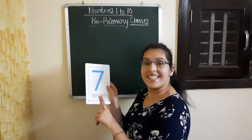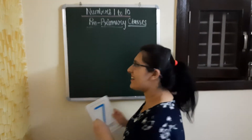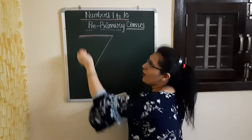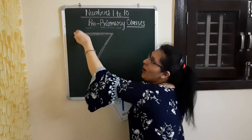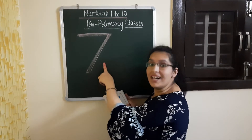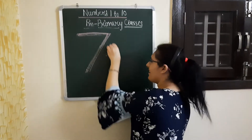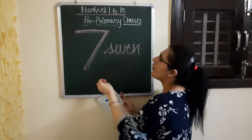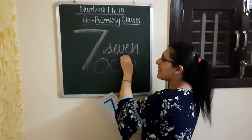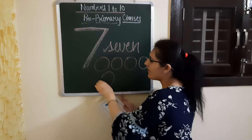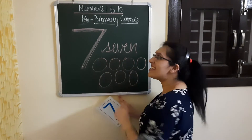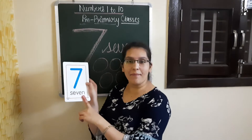Now comes number 7. So let us make it: over the top and down we go. Over the top and down we go. This makes number 7. 1, 2, 3, 4, 5, 6 and 7. This is number 7.